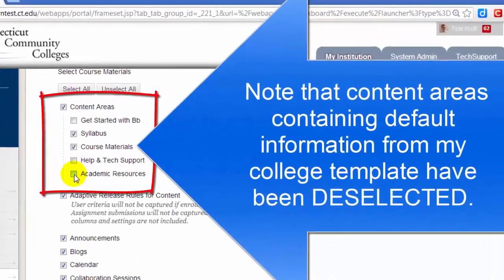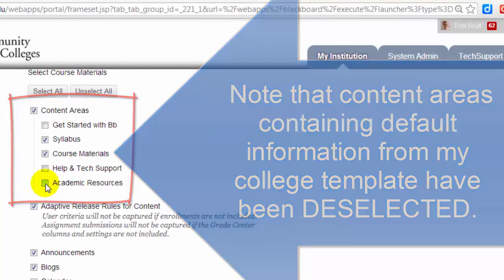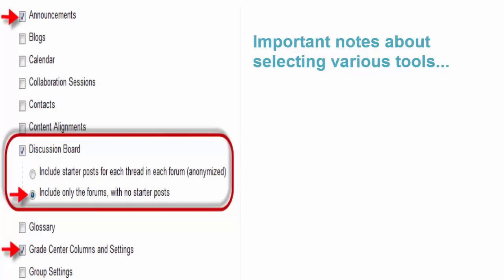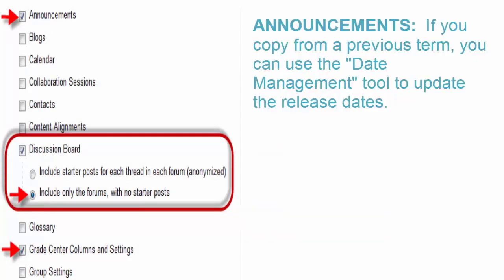Now that you're familiar with the types of content in your destination course based on your college's template, we'll continue with the course copy process. Here are a few important notes about some of the tools to copy. Announcements: if your announcements from a previous term are going to be relevant to your new term, then copy them. If not, you can leave this unchecked. If you do copy your announcements, remember you can use the Date Management tool to quickly update all your announcement release dates.